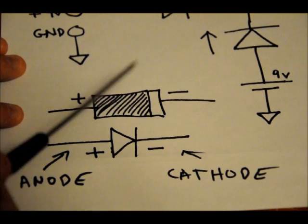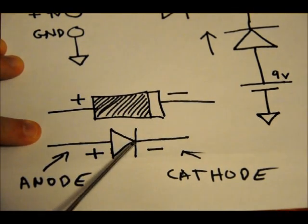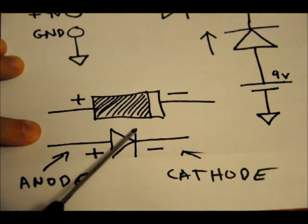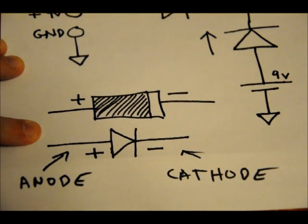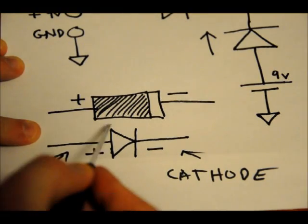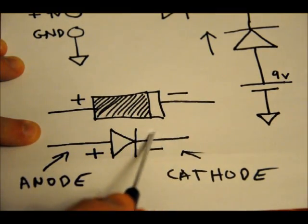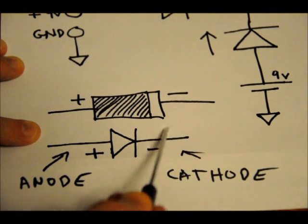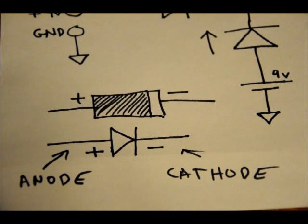Now, again, this is the physical representation. This is the schematic symbol. The base of the triangle is the positive side. And the negative side has the line across it. That's the negative side. So if you want to look at it this way, positive power can flow through like an arrow this way. But it's blocked if positive power comes this way because there's a wall here. That's just one way of looking at it. That's the way I looked at it in school.